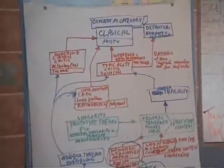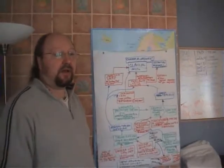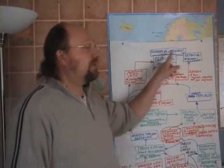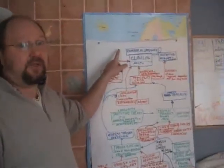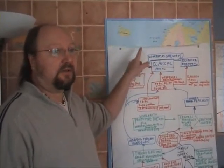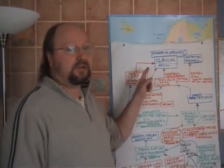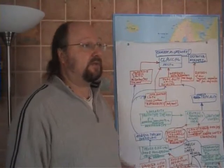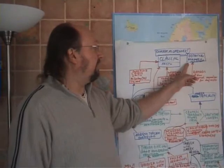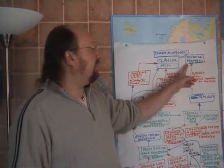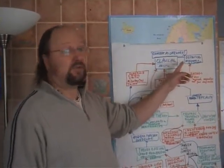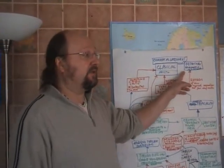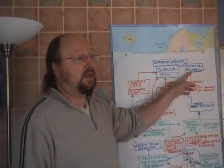We start with the classical theory. This entire chapter is based on the assumption that concepts are categories. This refers to Aristotle, the philosopher who created the classical theory of categories, based on logic. The principle of this classical theory is the definition of a category — one which has necessary and sufficient components for a member to belong to it. Any member of a category must have necessary and sufficient properties in order to belong to that category.